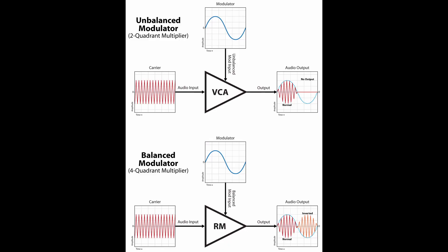Ring modulation is quite similar to amplitude modulation, with the difference that in amplitude modulation the modulator is shifted to be positive before being multiplied with the carrier, while in ring modulation the unshifted modulator is multiplied with the carrier. This has the effect that the ring modulation of two sine waves having frequencies of 1000 Hz and 500 Hz will produce the sum of the inputs with frequency 1500 Hz and the difference of the inputs with frequency 500 Hz.